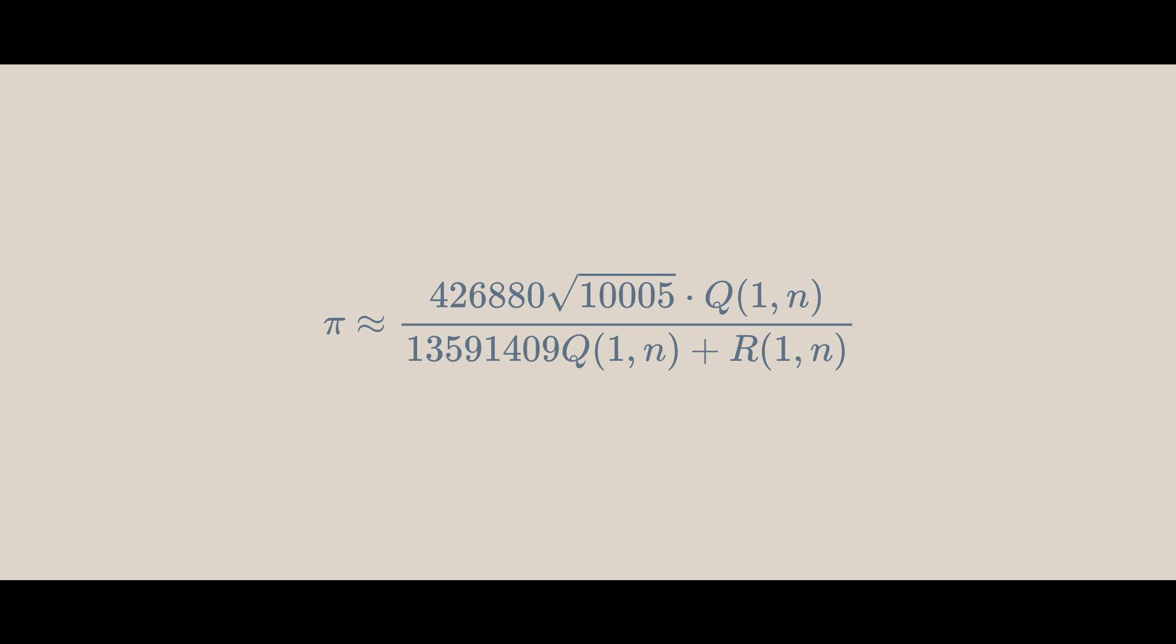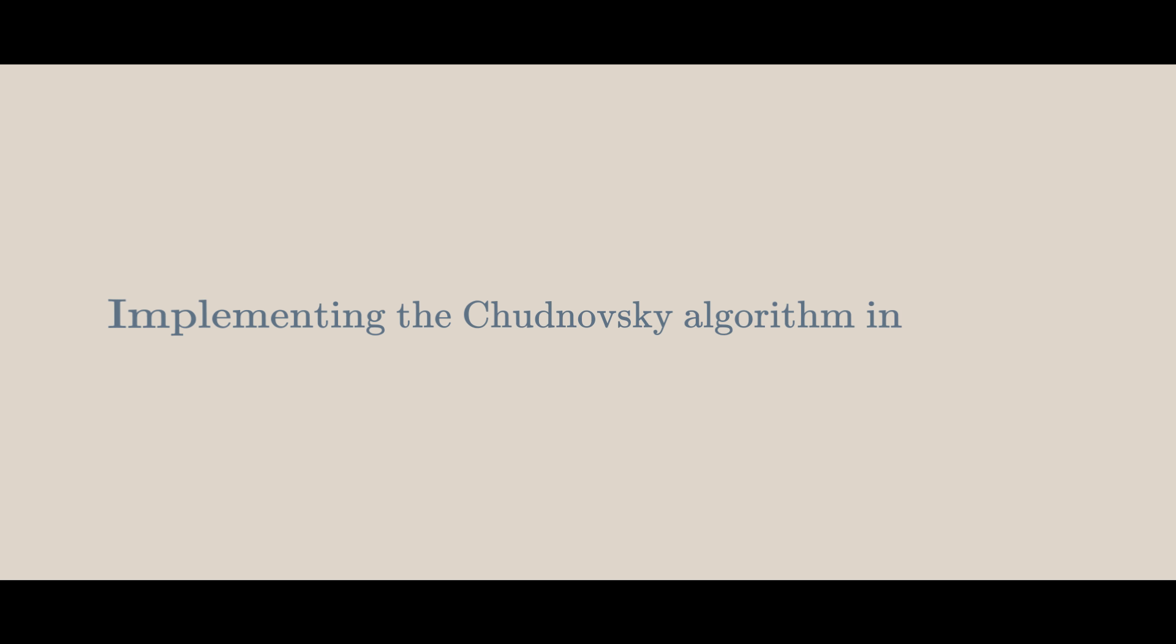Now that we've gone over all the mathematics, let's look at implementing the Chudnovsky algorithm in Python. Let's start by importing the decimal module to handle decimals to any desired precision. If you don't want to do this, you can look into something called fixed point arithmetic. Let's define a function called binary split, which takes in a value for a and b. This function is going to return P, Q and R of a,b in that order. This function is going to compute these with recursion.